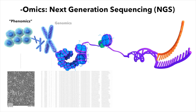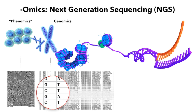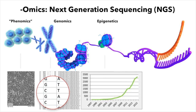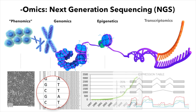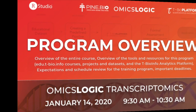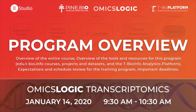Many types of Omics data can be generated using next-generation sequencing, or what is also known as high-throughput sequencing. The data can show detailed information about genomic variants, epigenomic regulation, as well as gene and isoform expression. In this program, we will focus on one type of this kind of data: transcriptomics.